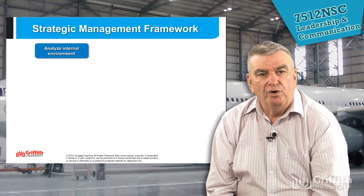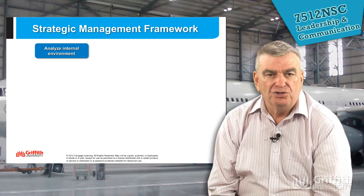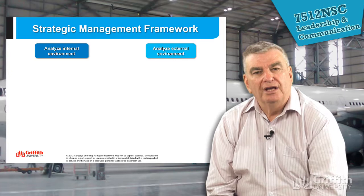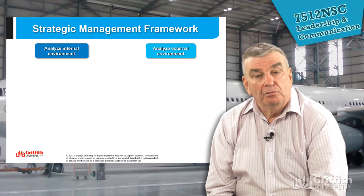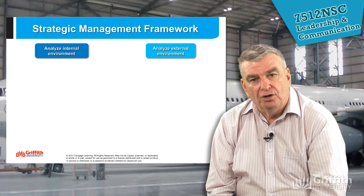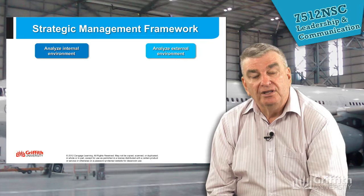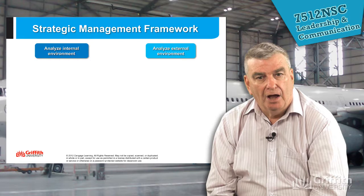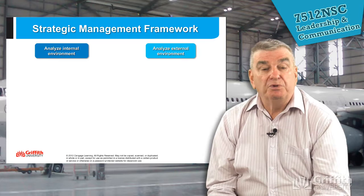So what's a strategic management framework? First of all, we've got the internal environment — things that the company has strong control over. Then we have the external environment, and a good acronym to remember that is PESTLE: Political — what sort of things are government doing; Economic — how is the economy going; Sociological — what changes are happening in society; Technological; Legal; and Ecological — what's happening to the ecology.